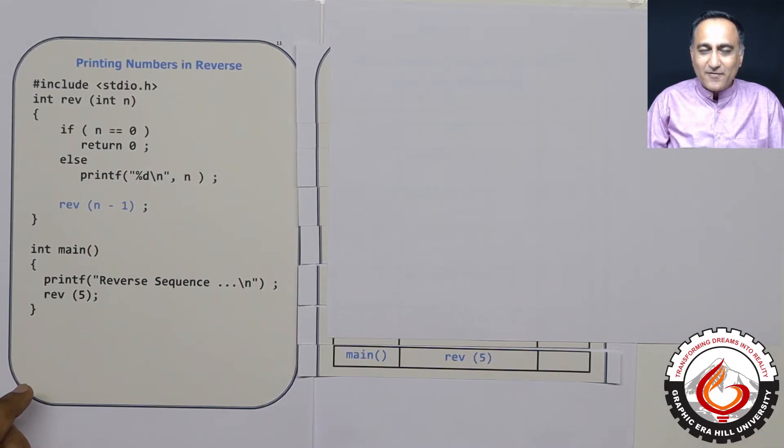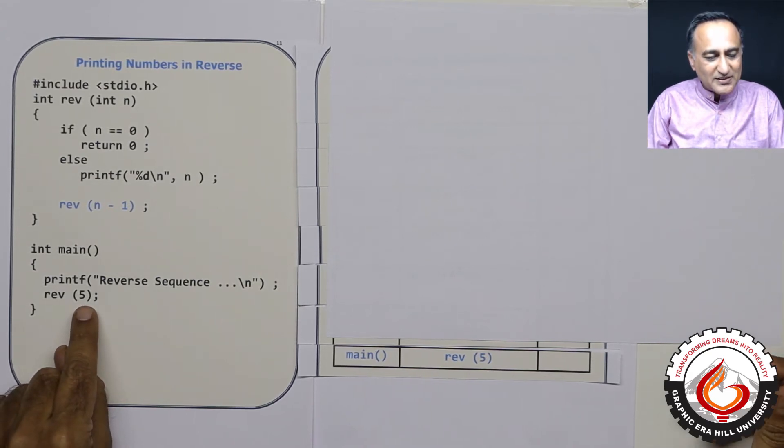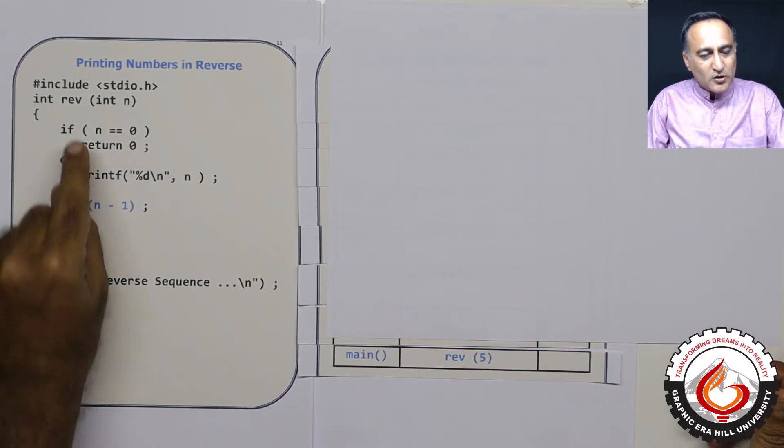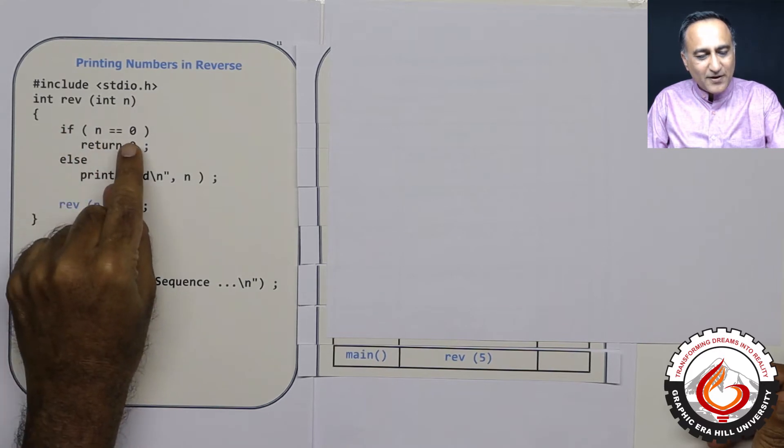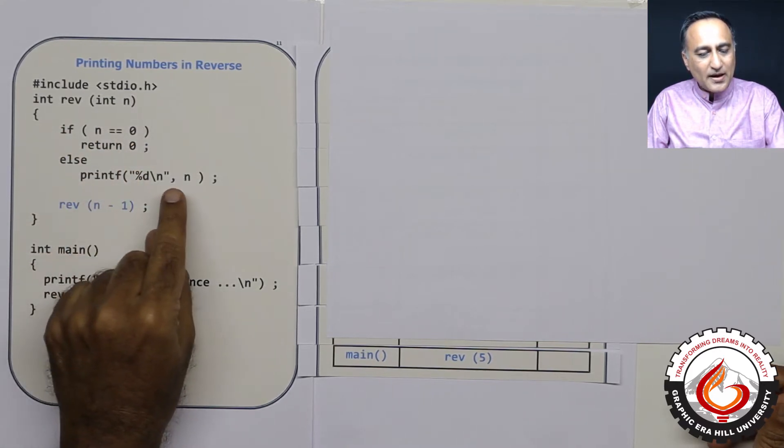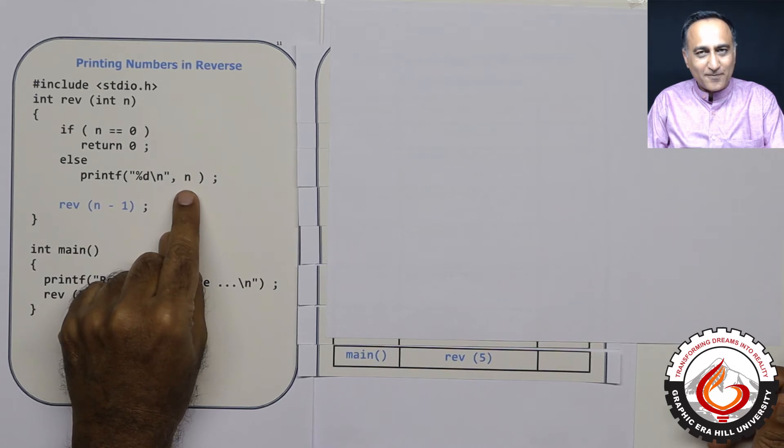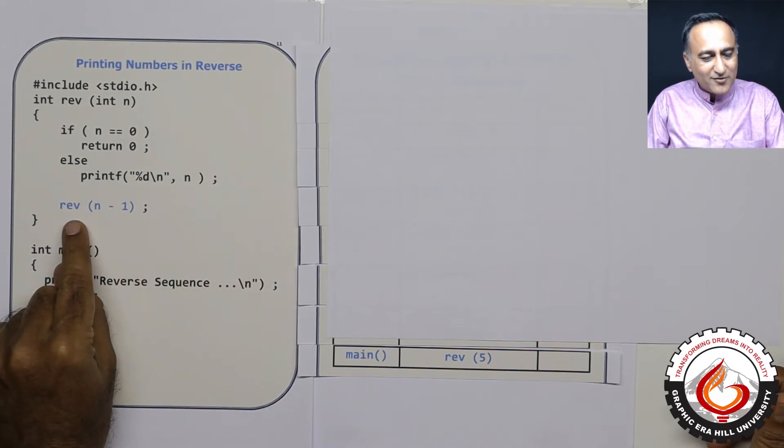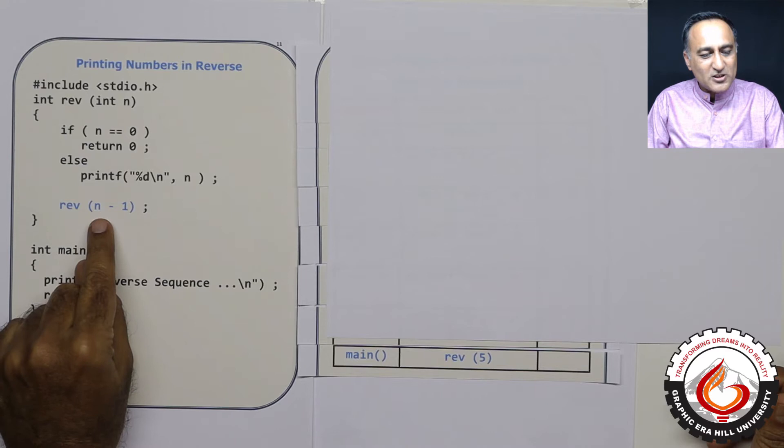So what is happening here, if I have to print numbers in reverse, it's quite simple because I'm already passing the number 5. So I'm going to call this reverse. Since 5 is not equal to 0, I'm going to come to the else part. I'm going to print 5. And then I'm going to call this reverse with 1 less than 5 which is 4.